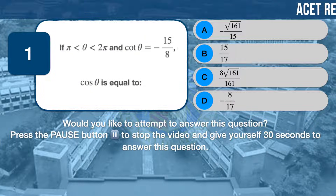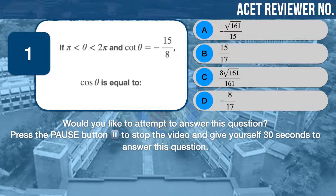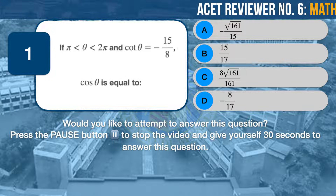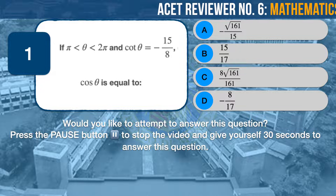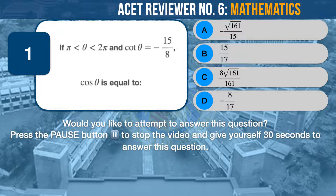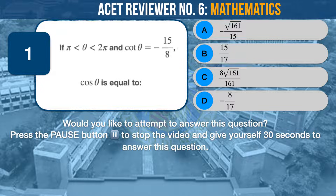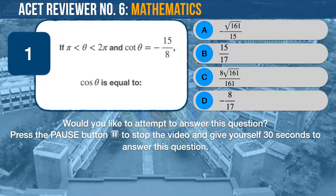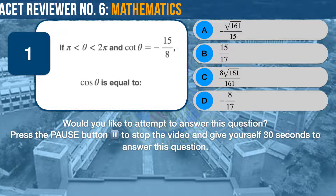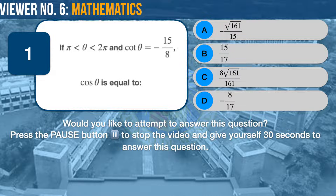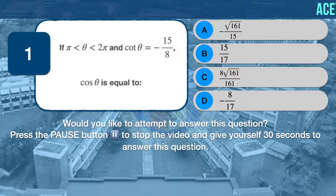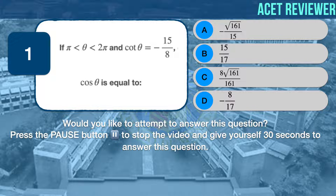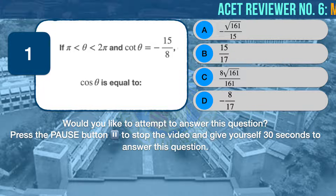Math question number one. If theta is greater than pi and is less than 2 pi, and cotangent theta is equal to negative 15 over 8, cosine theta is equal to: A, negative square root of 161 over 15; B, 15 over 17; C, 8 times square root of 161 over 161; D, negative 8 over 17.